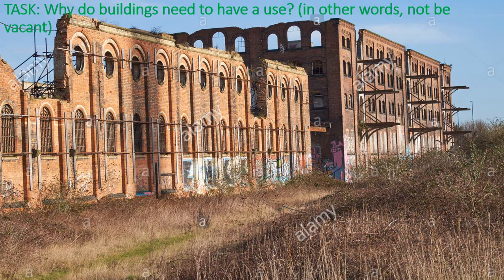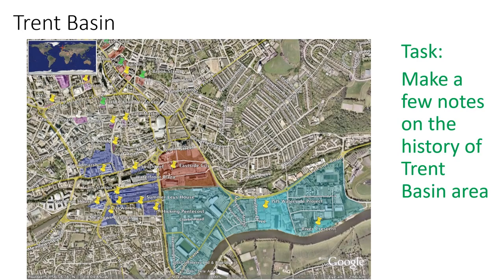There's a quick task on this slide: why do buildings need to have a use — in other words, why do they need to not be vacant? You might get some clues from this picture. Have a go at that, then unpause when you're ready to continue. You may have said things like they look ugly, they attract crime — as you can see from the picture all the windows are smashed in — the buildings fall into disrepair, the reputation goes downhill, and people start to move away, which can lead to a domino effect.